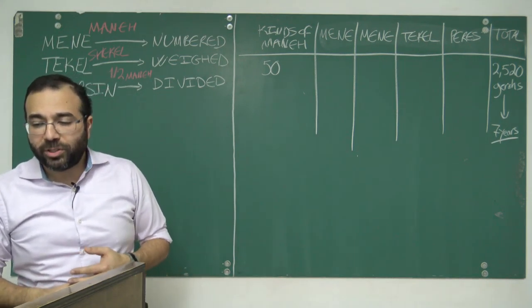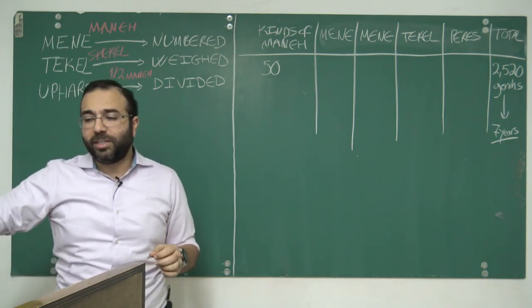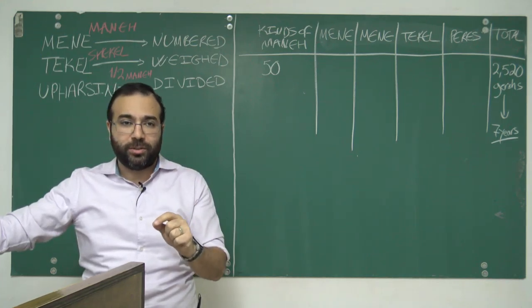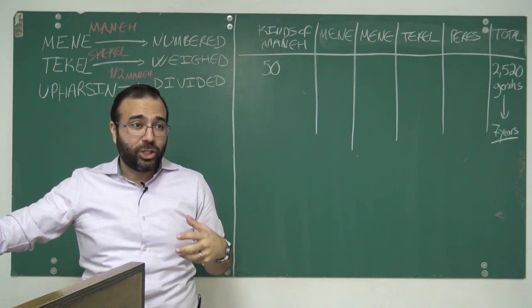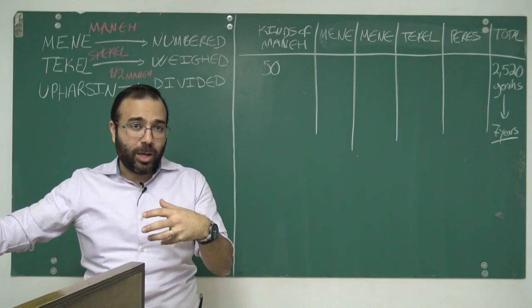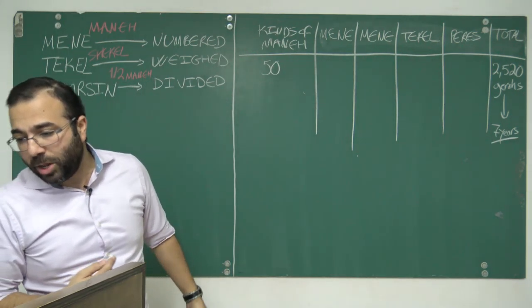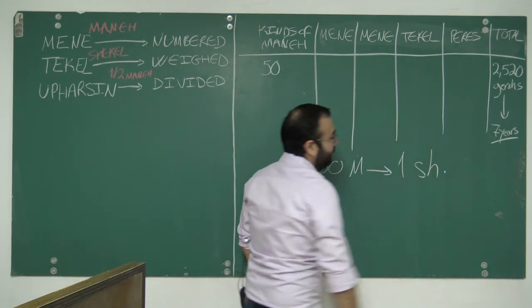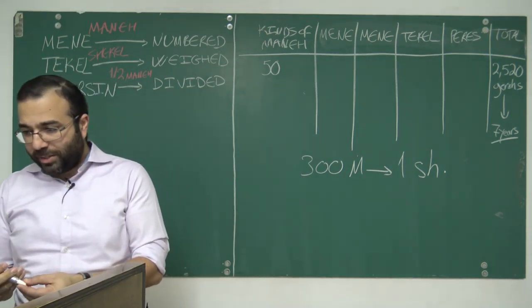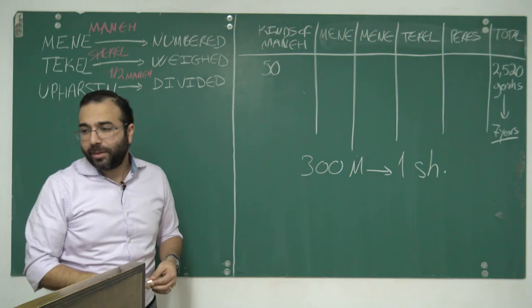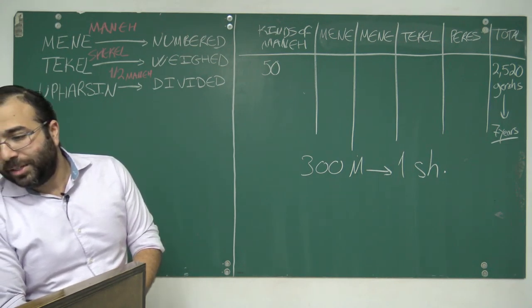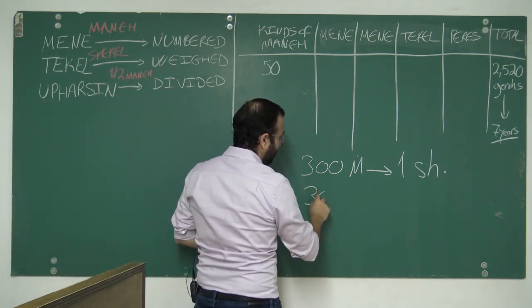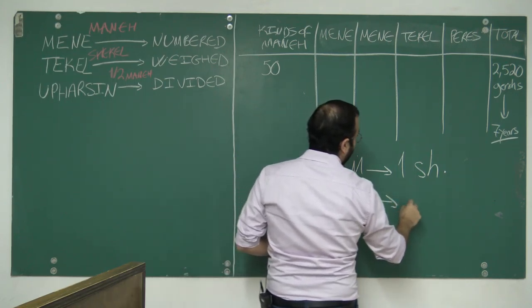You're going to need two references: First Kings chapter 10 and Second Chronicles chapter 9. There's some numbers in there. I just would like to show you one way you can get the value of a money from the Bible without going to guys who mess around with history because they want to change what the Bible says. Look at First Kings 10:17: he made 300 shields of beaten gold, three pounds of gold went to one shield. That word there, pound, is money.